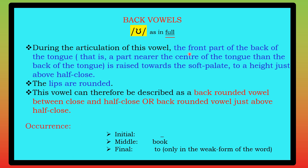During the articulation of this vowel, the front part of the back of the tongue — that is, the part nearer the center of the tongue — is raised towards the soft palate to a height just above the half-close position. The lips are rounded. This is just above the half-close, not the complete close position.